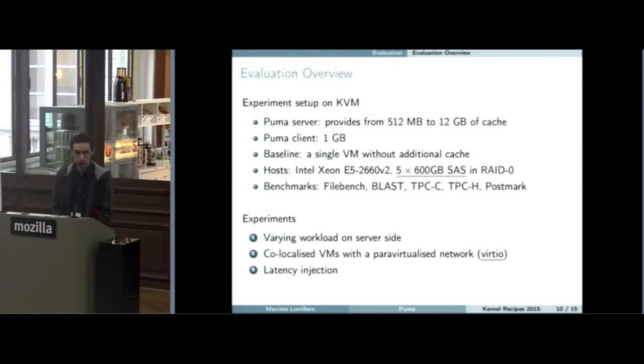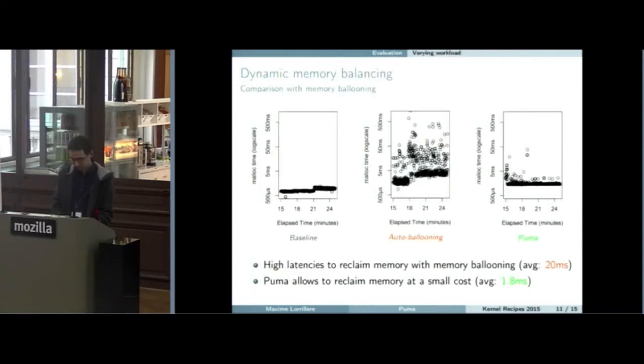First is to vary the workload on the server side to see if we are able to reclaim the memory that we lent to the first VM. Then we've made some experiments with co-localized VMs, just to take benefit of the paravirtualized network between VMs. And then we inject latency between VMs to see how we are able to manage the response time. For the first experiment, we compare to the baseline and to the ballooning approach that was presented previously. We see that with PUMA, we have only a small cost when we want to reclaim the memory. This is like 10 times faster than with an automatic ballooning approach.